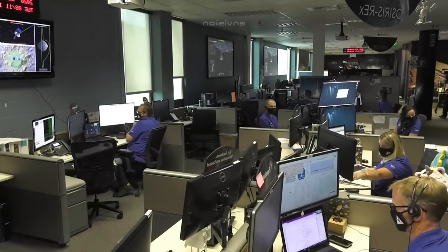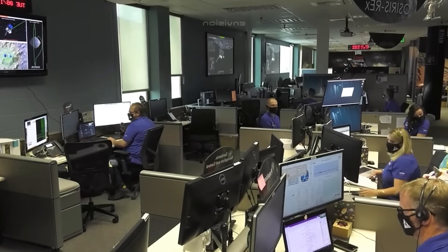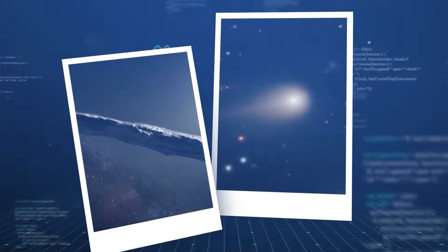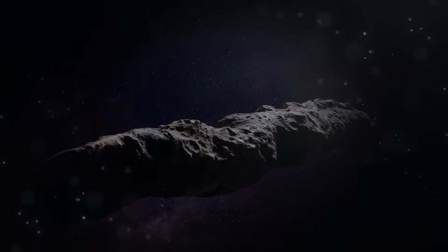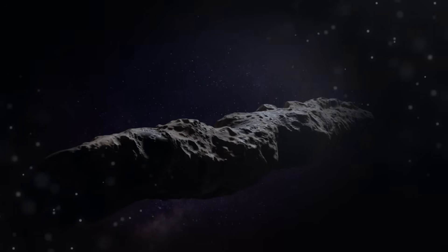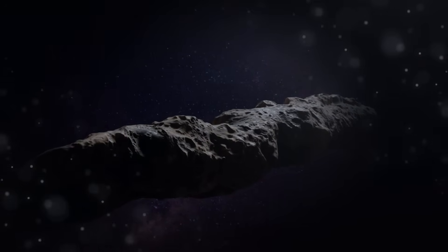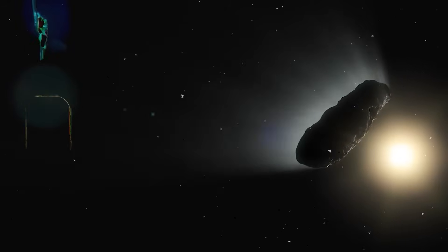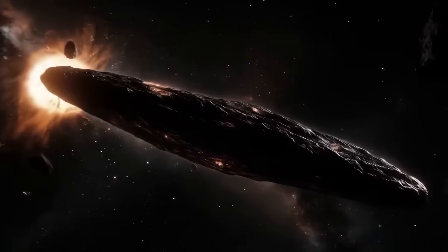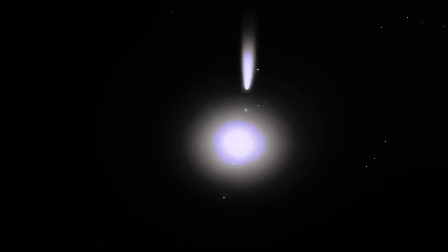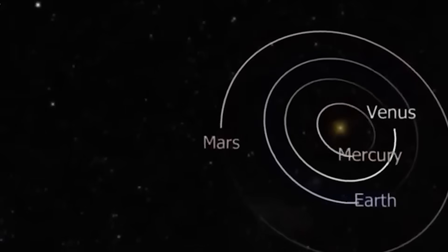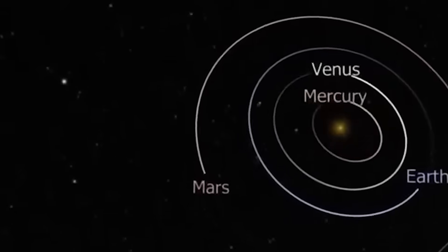With tensions rising in private defense circles and black budget agencies, a radical new theory began to gain traction – the lock and key hypothesis. According to this idea, Oumuamua was the lock, a silent, inert object sent to passively assess Earth's readiness, intelligence, and reaction. It was harmless because it was never meant to interact. It was a trigger, a cosmic safe, and Three-Eye Atlas – that's the key – designed not just to observe, but to unlock something, whether buried within the planet, encoded in our species, or awaiting activation in orbit.